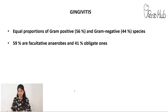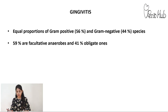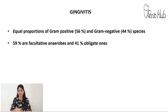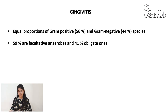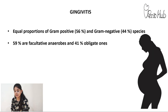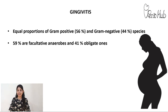In the gingivitis state, there is inflammation of the gingiva wherein there are equal proportions of gram-positive and gram-negative bacteria — almost 56% gram-positive such as Streptococcus and Actinomyces, and almost 44% gram-negative such as Veillonella or Prevotella intermedia. There is also a category called pregnancy gingivitis: because of increased hormones and steroidal content in the body, pregnant women can develop this condition, and the major organism associated with pregnancy gingivitis is Prevotella intermedia.